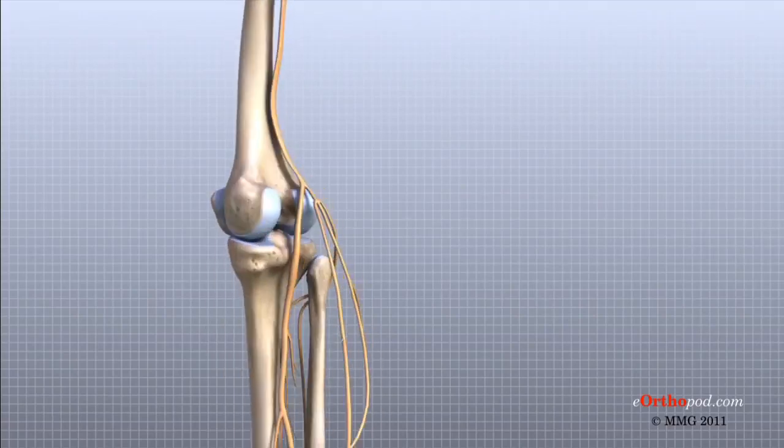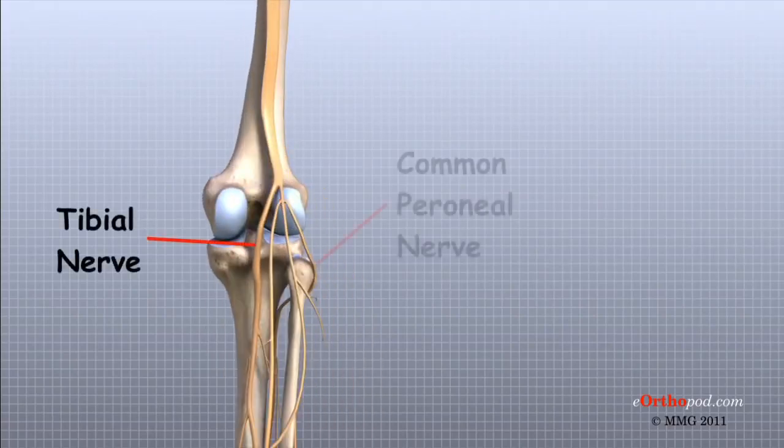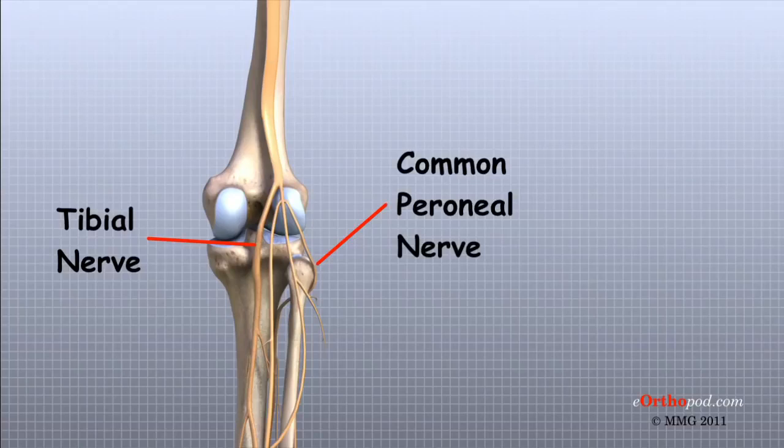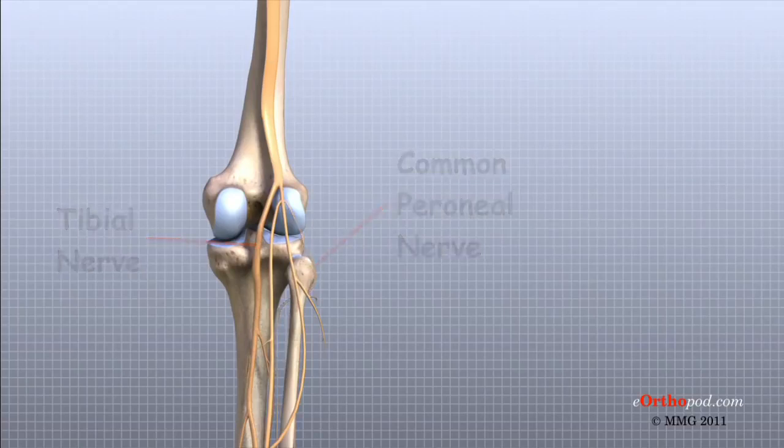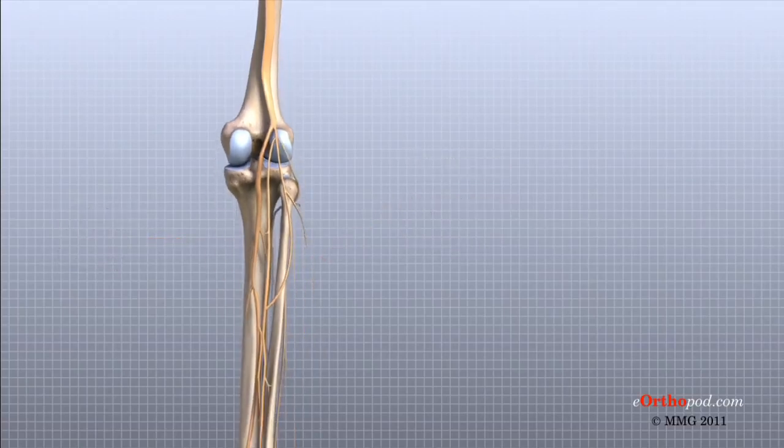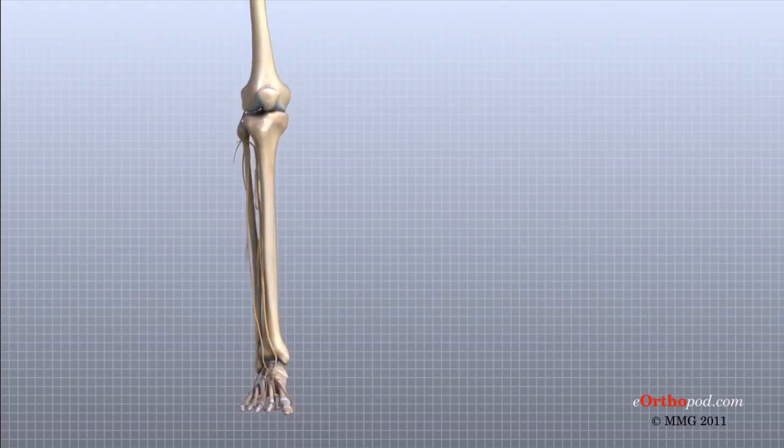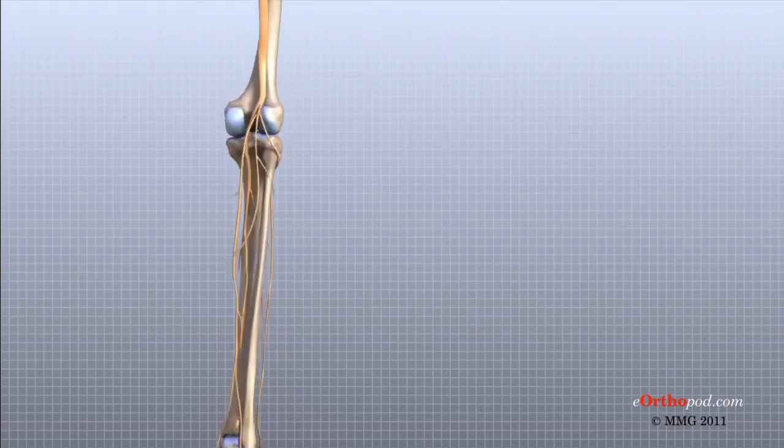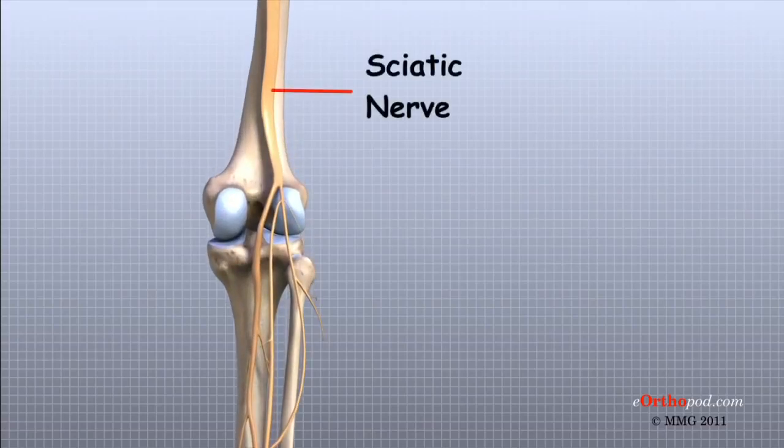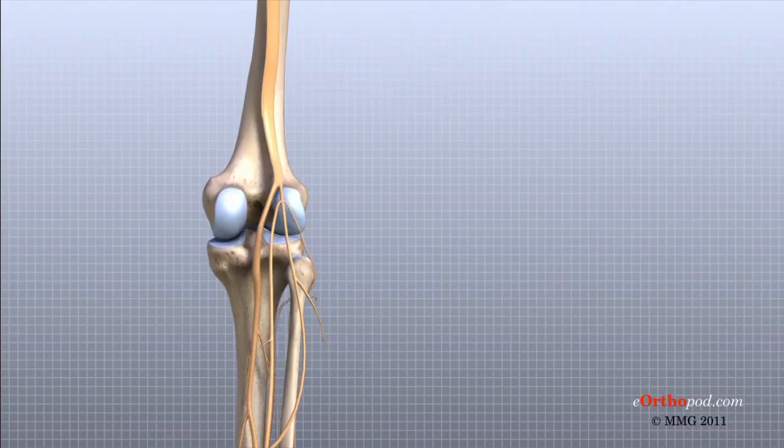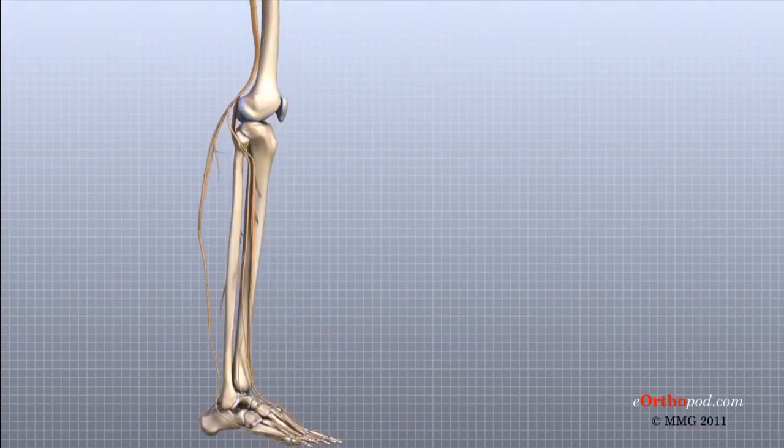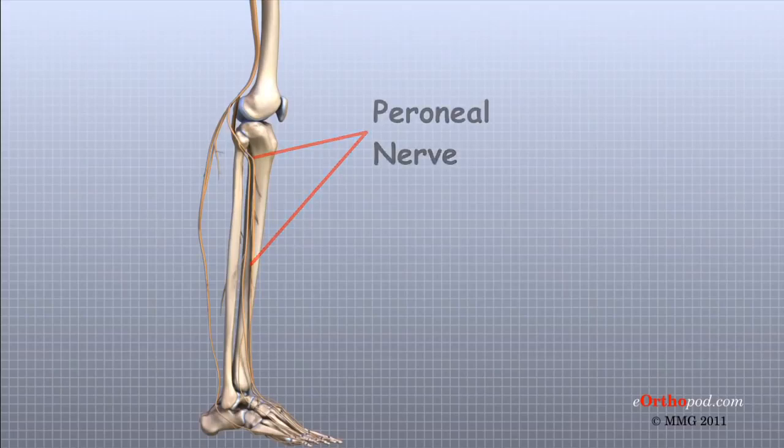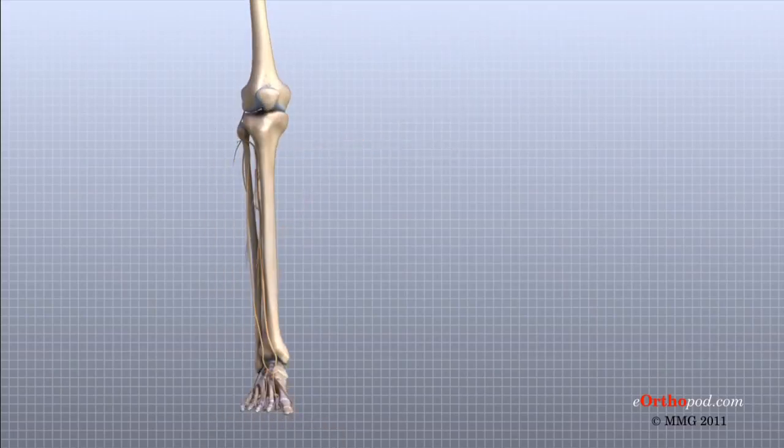The most important nerves around the knee are the tibial nerve and the common peroneal nerve in the back of the knee. These two nerves travel to the lower leg and foot, supplying sensation and muscle control. The large sciatic nerve splits just above the knee to form the tibial nerve and the common peroneal nerve. The tibial nerve continues down the back of the leg, while the common peroneal nerve travels around the outside of the knee and down the front of the leg to the foot. Both of these nerves can be damaged by injuries around the knee.